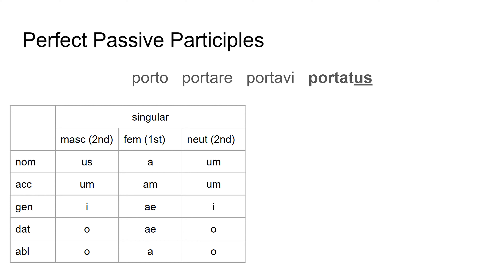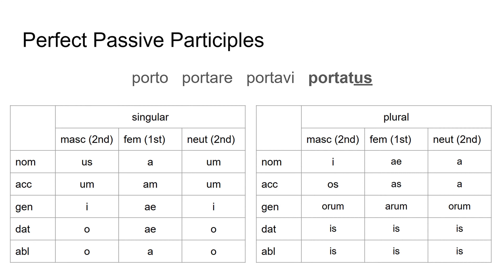If I want to talk about more than one person or thing, I need my plural endings. Again I just use my 2-1-2 endings — my second declension endings, my first declension endings, and my second declension neuter endings. Don't worry if you can't remember all of these; you can download the reference guide from the link in the description. It has all of those written out for you to keep to hand.